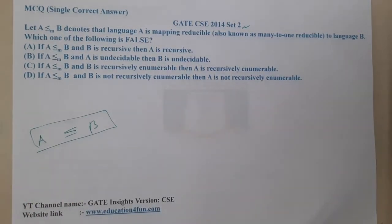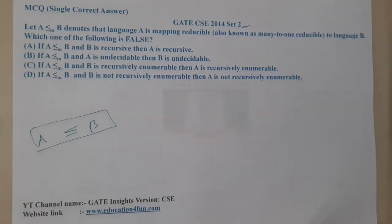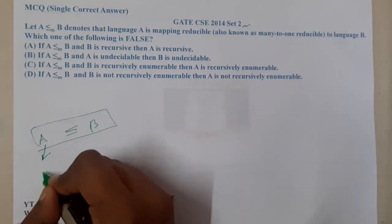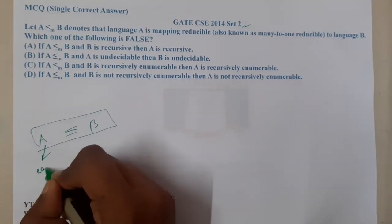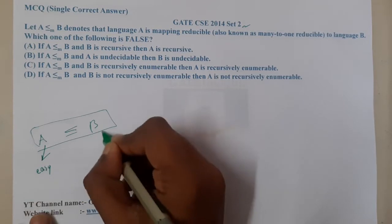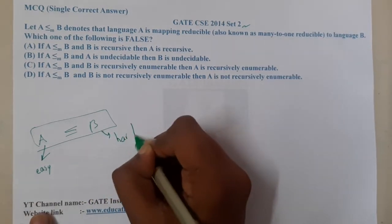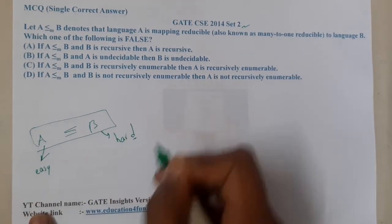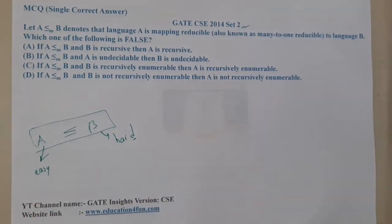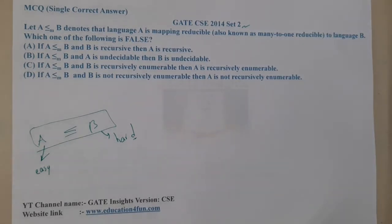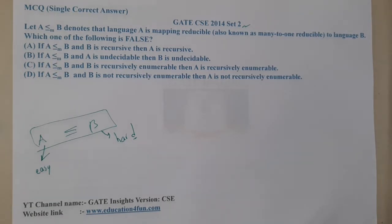Based on the reducibility, whenever they use the word 'reducible,' the problem on this side is easy and the problem on the other side is hard. So we can conclude that A is an easy problem and B is a hard problem.